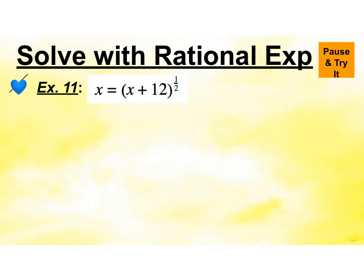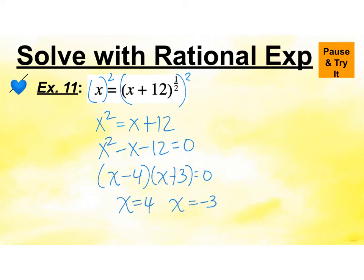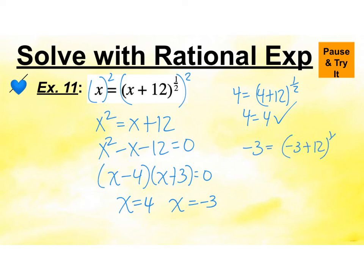Go ahead and try this one. This is raised to the 1 half, which is a square root. So I'm going to square both sides. I get x squared equals x plus 12. Set it into standard form because it's a quadratic, then factor. I get x equals 4 and x equals negative 3. Checking x equals 4: 4 equals the square root of 16, so 4 equals 4 — that works. Checking negative 3: negative 3 equals the square root of 9, which is 3, and negative 3 does not equal 3, so I reject negative 3. My answer is x equals 4.